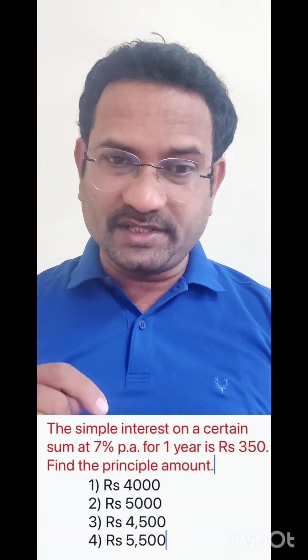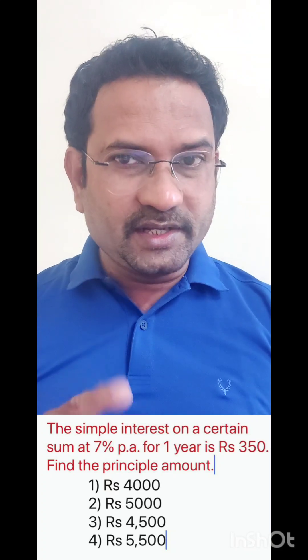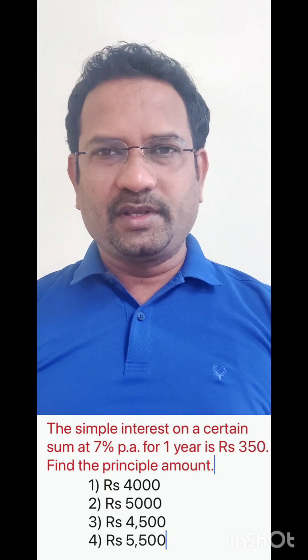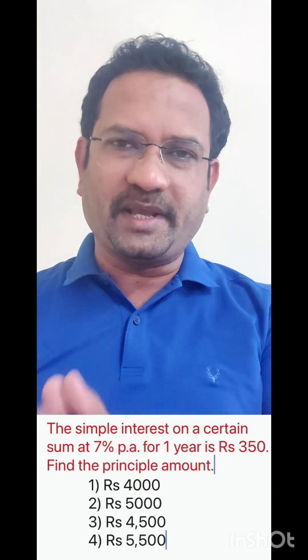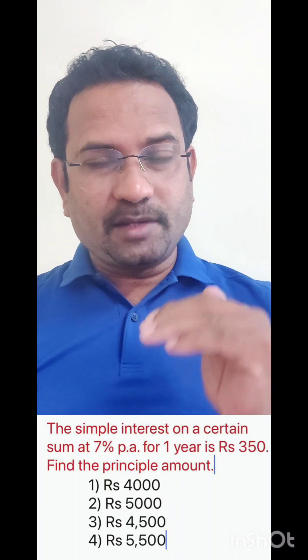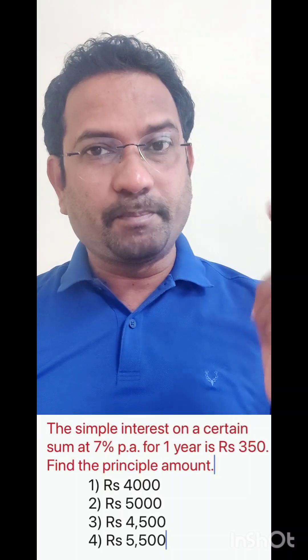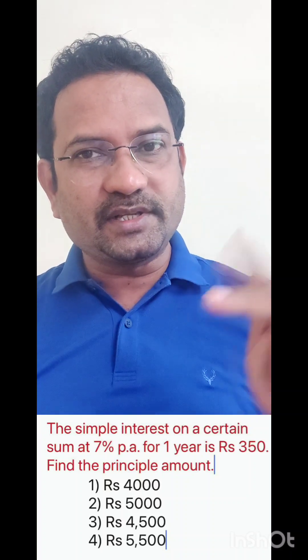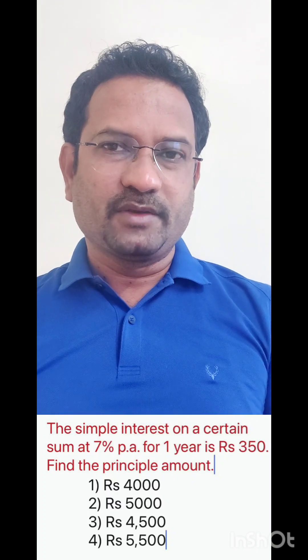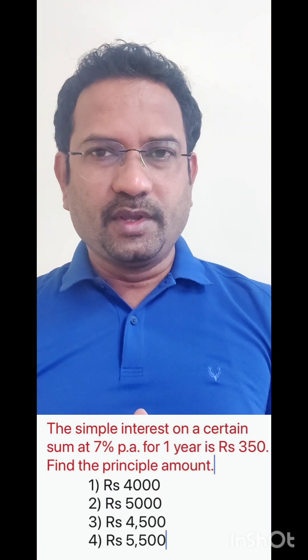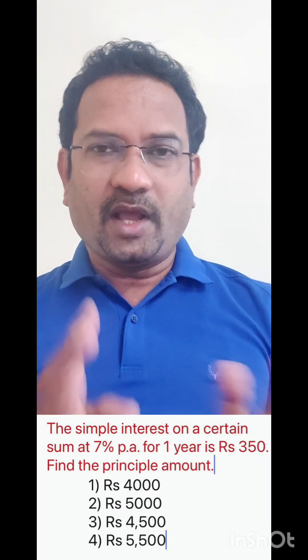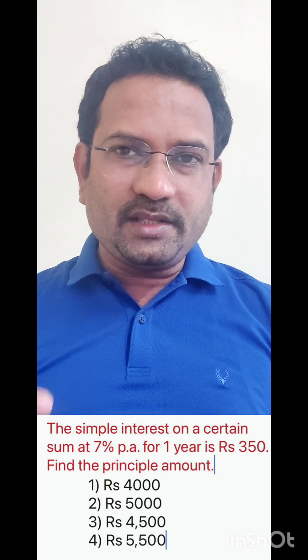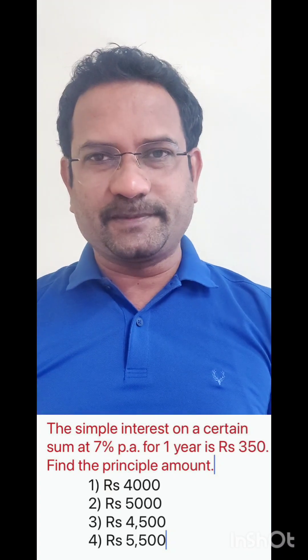The first question is: the simple interest on a certain sum at 7% per annum for one year is 350 rupees. Find the principal amount. The question is about simple interest and the interest rate is 7% per annum. The moment you see percent questions, it is per 100 — per 100 rupees, 7 rupees is charged. For 200, it becomes 14 rupees. For 500, it becomes 7 into 5, which is 35 rupees. Now the question says, per one year, the interest is 350 rupees.